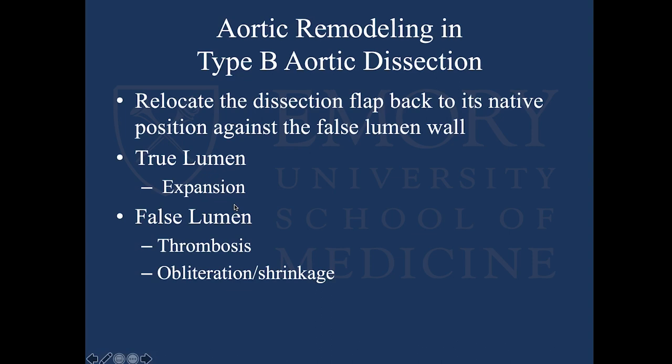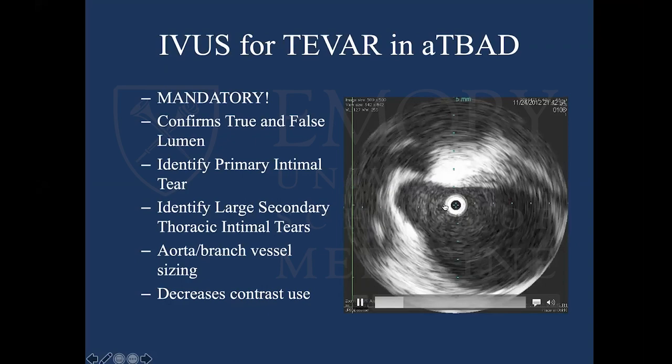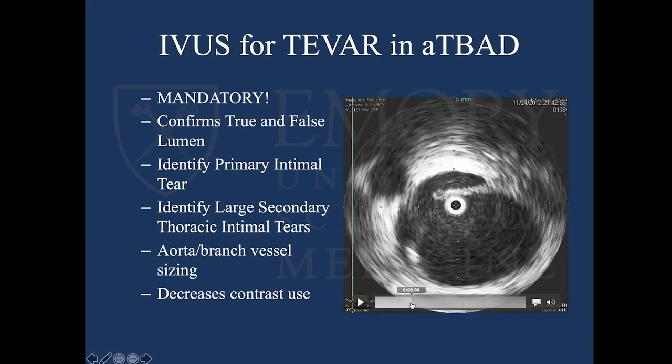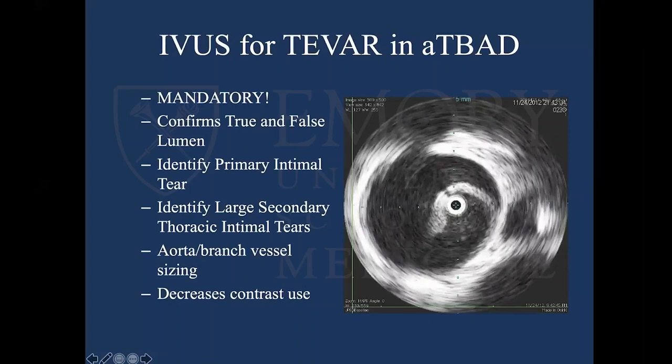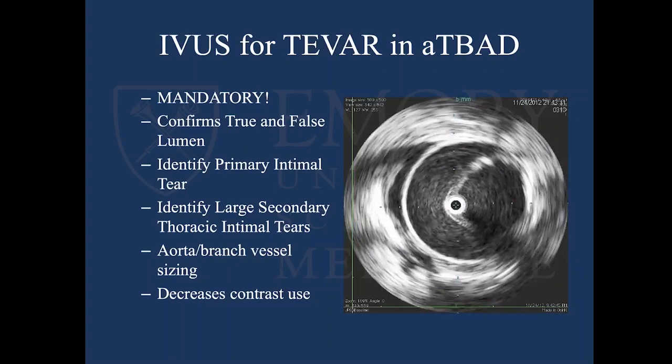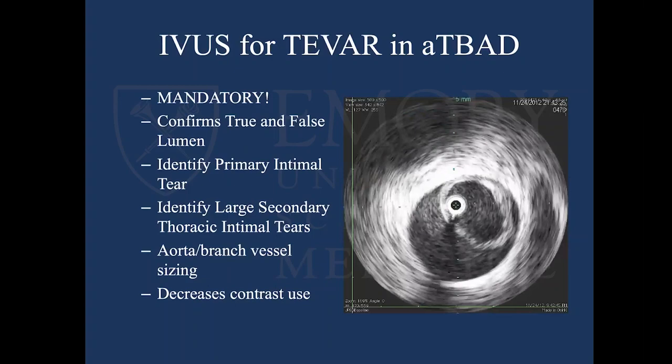You have to use intravascular ultrasound for the stent. IVUS is mandatory for stenting type Bs because it tells you where you are — it confirms you're in the true lumen and not the false lumen. You do not want to expand a stent graft into the false lumen. In addition to identifying the primary tear, it allows you to identify large secondary tears and size your graft. You could do an entire case in someone with renal failure without any contrast using IVUS.